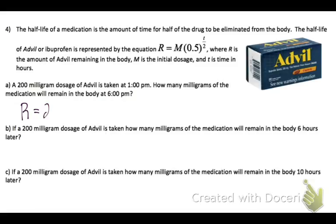M is my initial dosage of 200. And T for time looks like 5 hours have elapsed from 1 to 6. So we have 5 over 2.